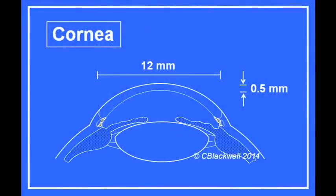In the adult, the average cornea is 12 millimeters wide. Thickness in the center is half a millimeter, at the edge 0.7 millimeters. Think about that, only half a millimeter thick.